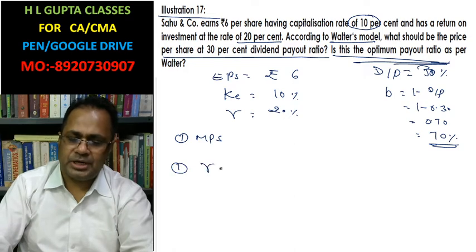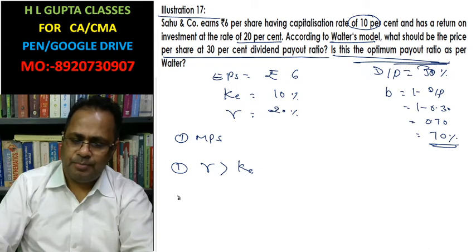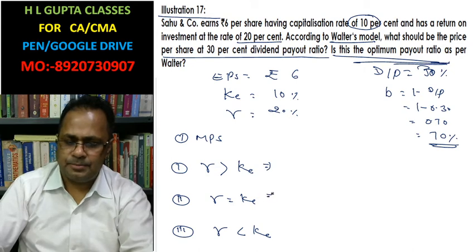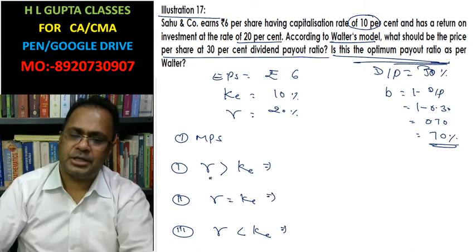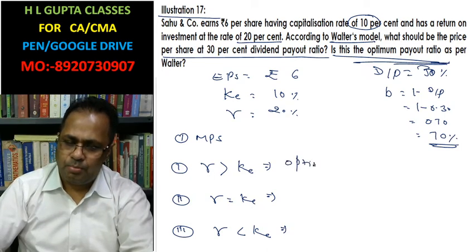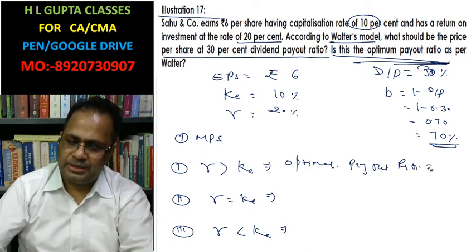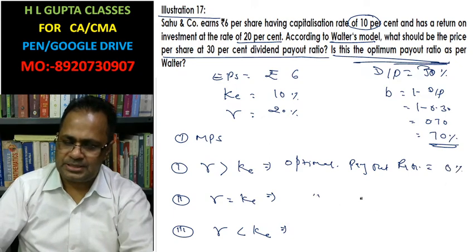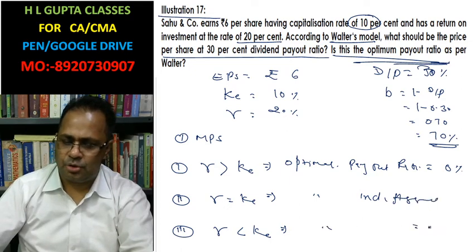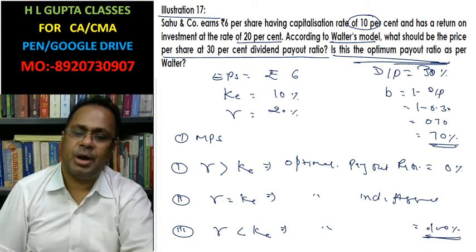As per Walter's model, there are three cases: R is greater than KE, R equal to KE, and R less than KE. In this case, R is greater than KE, so the optimal dividend payout ratio is 0%. In the indifference case it is any ratio, and when R is less than KE, the optimal payout ratio is 100%.